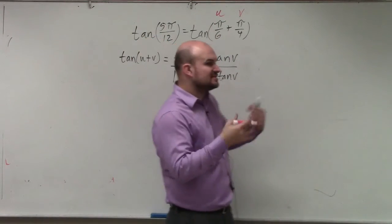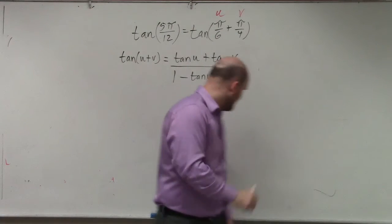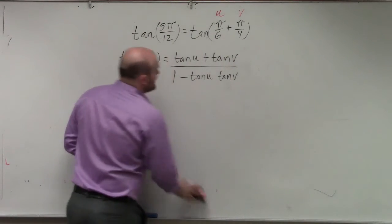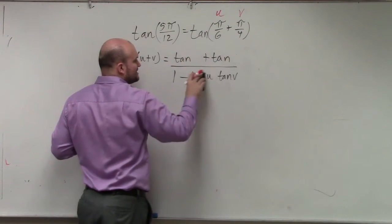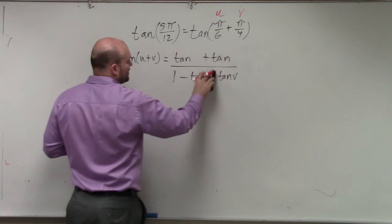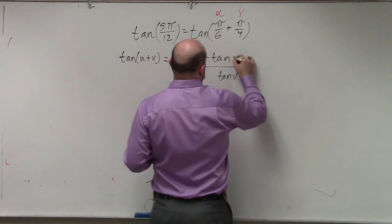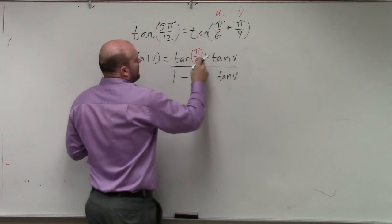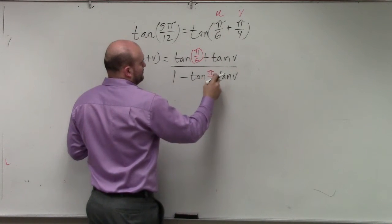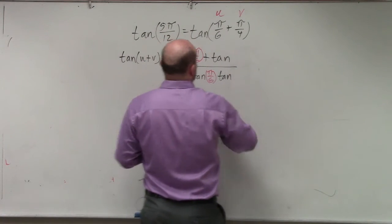So anyways, the first step I would always do is identify what you want to be as your u and your v. Then what I would do is replace, I'm just going to save some work here, instead of rewriting it, I'm just going to replace u. Let's do it one at a time. I'll replace u with π over 6, and then I'll replace v with π over 4.